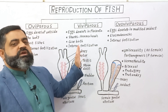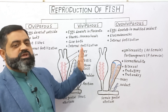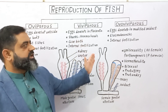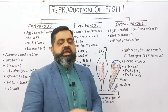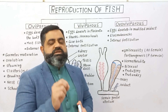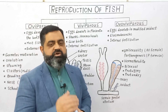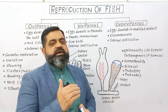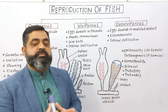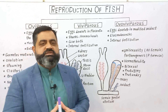The difference between viviparity and ovoviviparity is that in viviparity, the fish gives birth to young ones and nutrition is supplied through the umbilical cord to the placenta to the developing embryos. In ovoviviparous fish, nutrition is provided to the embryos from the yolk stored inside the eggs. After development is complete, the embryo is released from the eggs into the water.